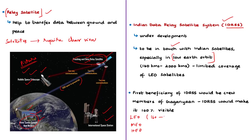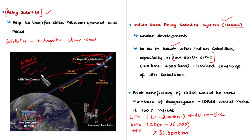In low earth orbit, the altitude is from about 160 kilometers to about 2,000 kilometers. Medium earth orbit varies from 2,000 kilometers to 36,000 kilometers. Orbits beyond 36,000 kilometers are known as high earth orbits. Most scientific and weather satellites are placed in low earth orbits, whereas communication satellites are placed at 36,000 kilometers. Satellites in low earth orbits have limited coverage of Earth's surface because their altitude is limited, so IDRSS can help these satellites maintain communication with ground stations always.